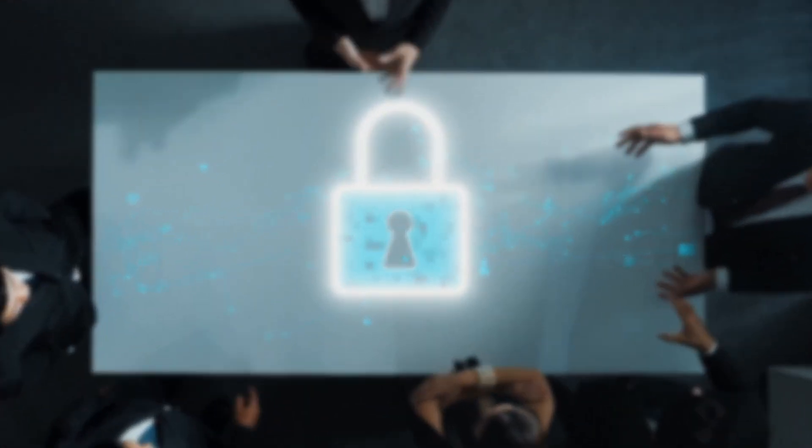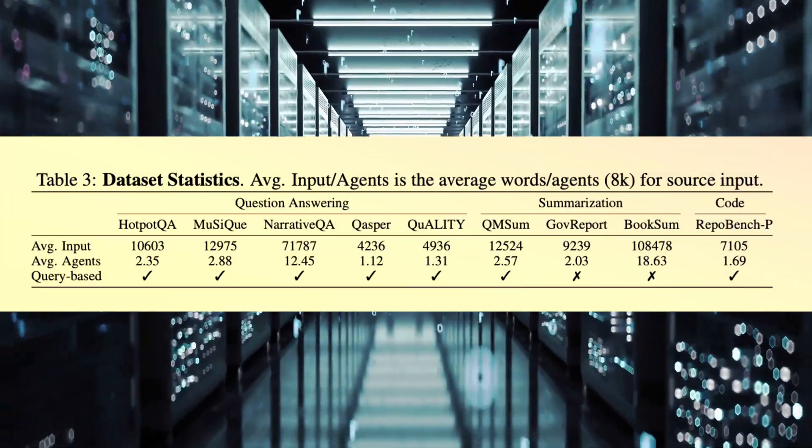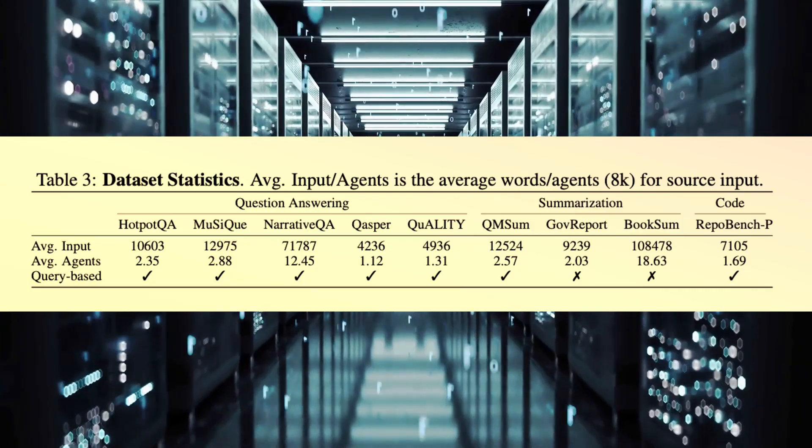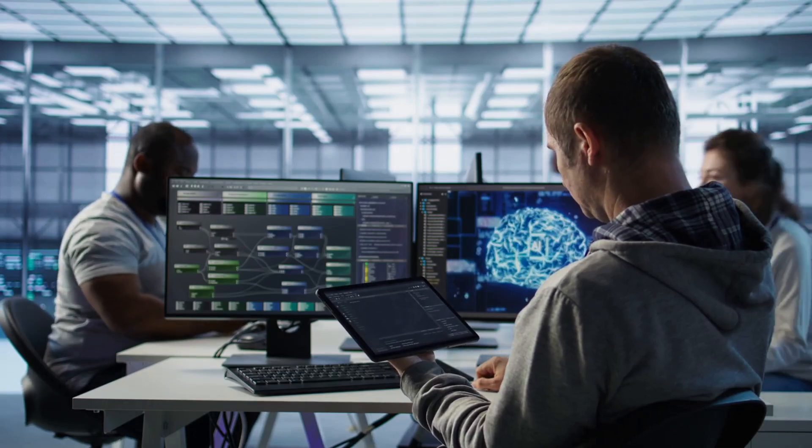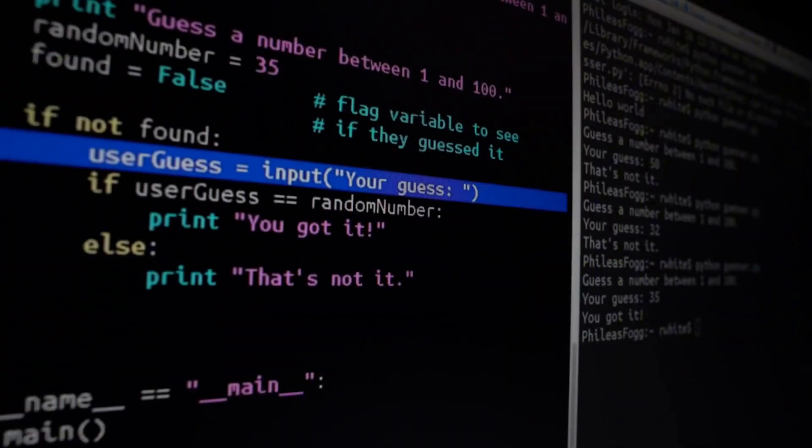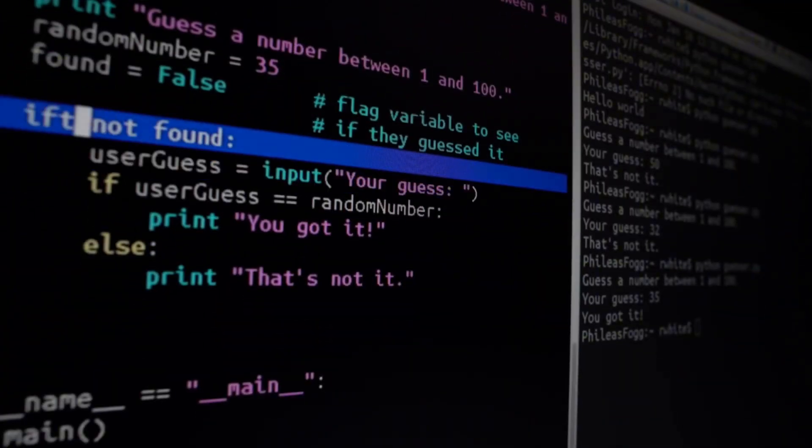The COA framework significantly reduces computational complexity compared to traditional approaches. RAG requires expensive retrieval operations and repeated model inference for large documents. Context extension models struggle with inefficiencies in token utilization, especially for irrelevant sections.